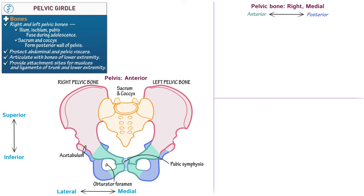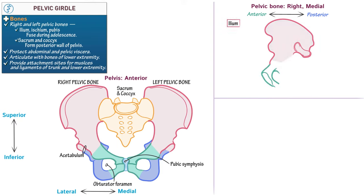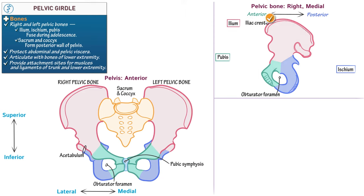Next, draw the three bones that fuse to form the pelvic bone: the ilium superiorly, the pubis anteriorly, and the ischium posteriorly. Label the obturator foramen, which is the round space created by the ischium and pubis. Then indicate the features of the ilium, beginning with the iliac crest, which is the bony ridge of the ilium.